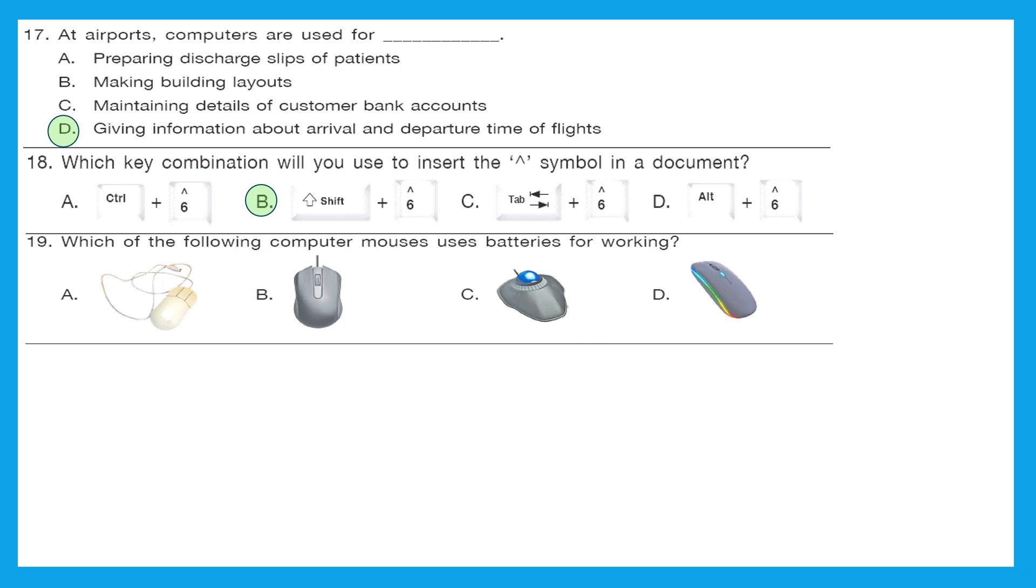Question 19: which of the following computer mouses uses batteries for working? So A is having wire. That is not the right answer. B also has same. C also has same. But D looks like a wireless mouse and wireless mouse operate with batteries. Option D is the right answer.